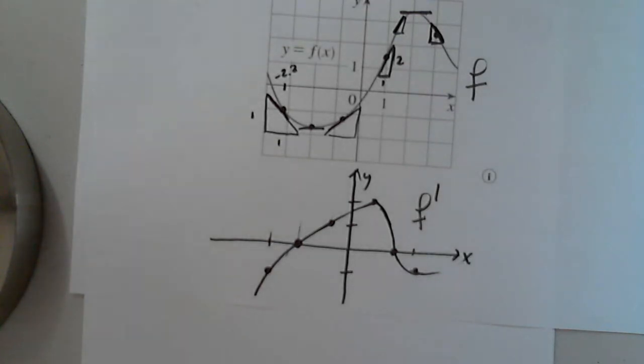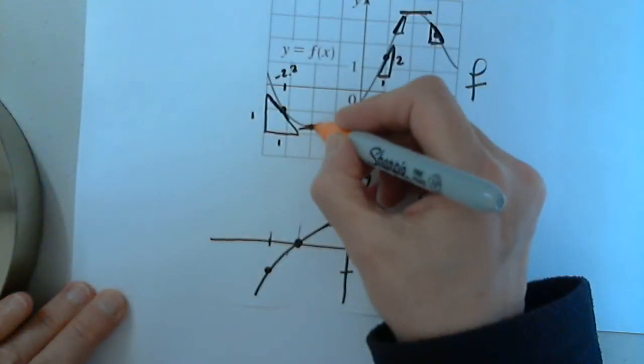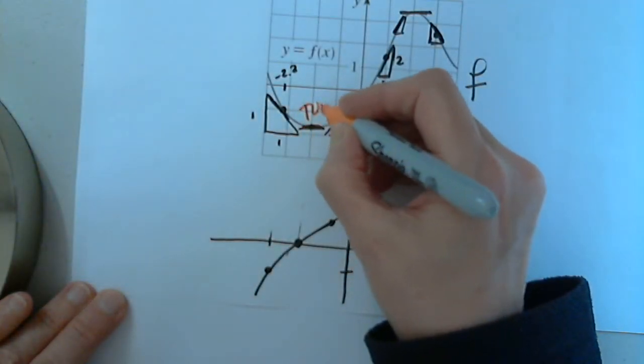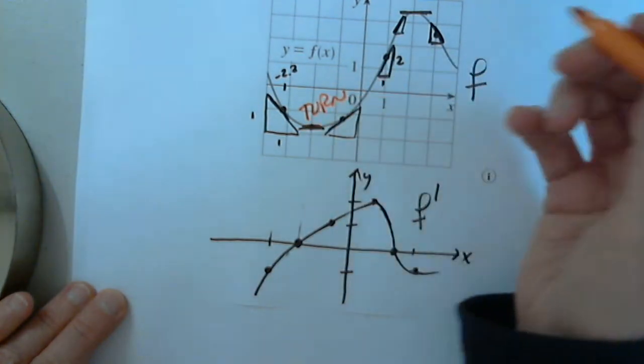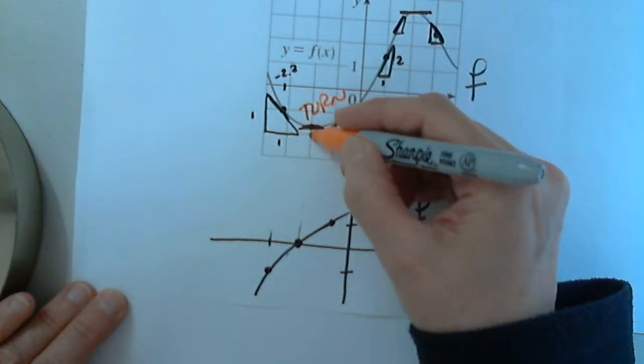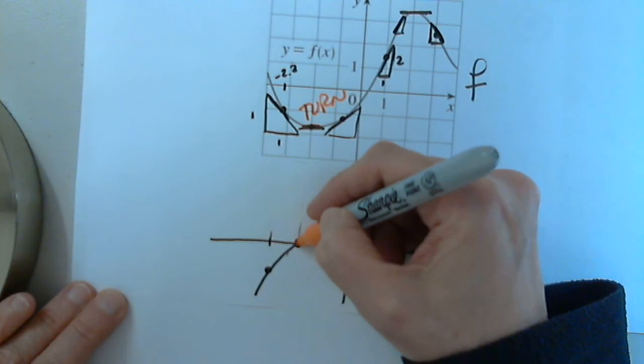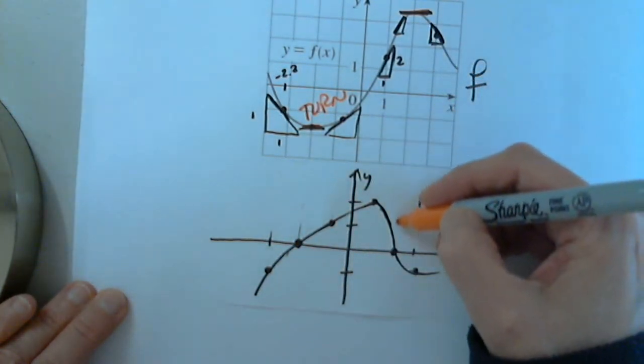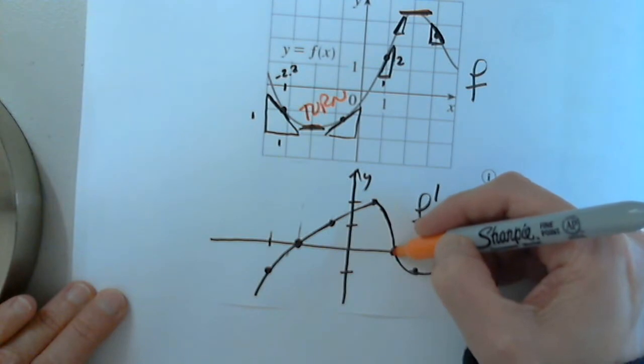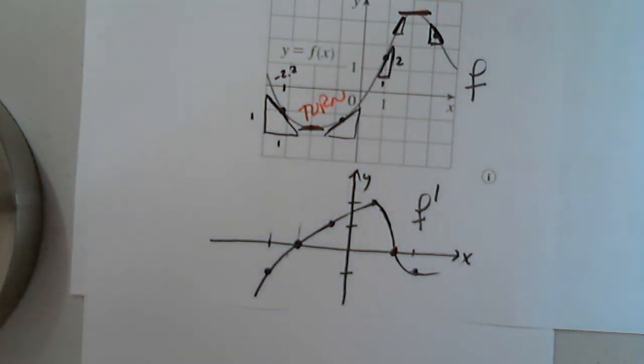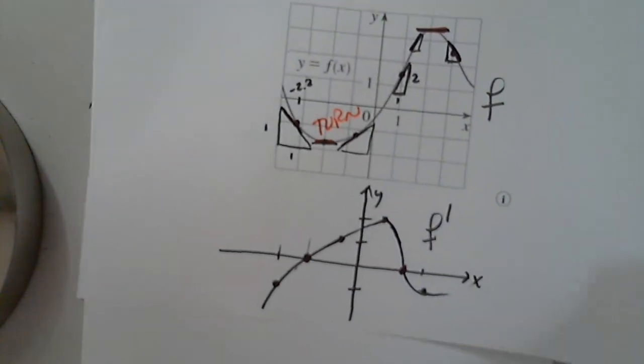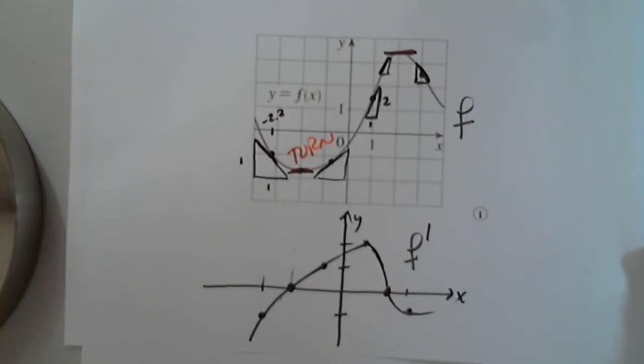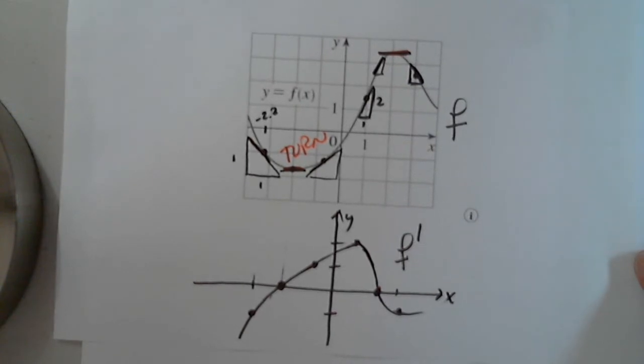Notice something very important. When the function has a turn, also called max min, the derivative is zero. Turn, the derivative is zero. And one other thing. Any questions on this? Any questions?